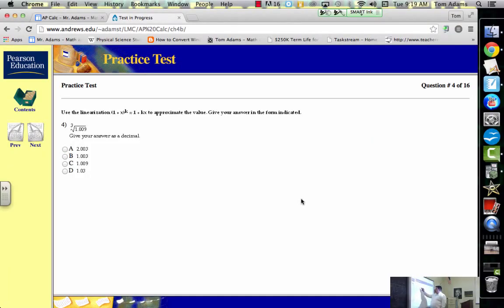So now problem number four, it says that we can do the linearization process to approximate the answer of the cube root of 1.009. I can plug that in the calculator and get the exact value, a decimal approximation. But what they want us to do is try to do this without a calculator. So now here's the thing.